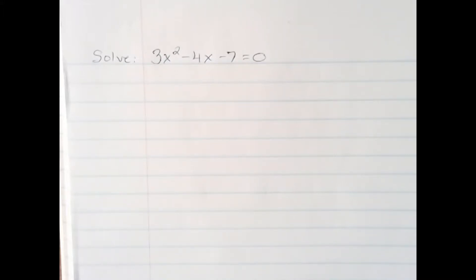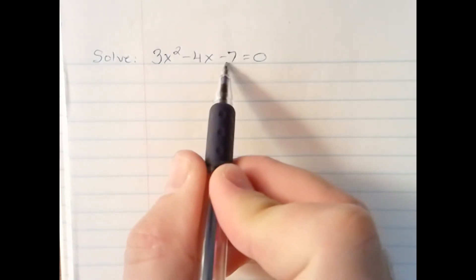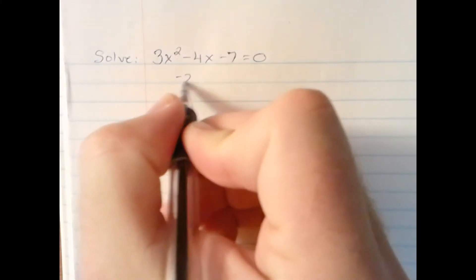Okay, so in this video, we need to solve another quadratic equation, 3x squared minus 4x minus 7. Once again, we need to use the AC method. Our A number is 3, our C number is negative 7. 3 times negative 7 gives us negative 21.